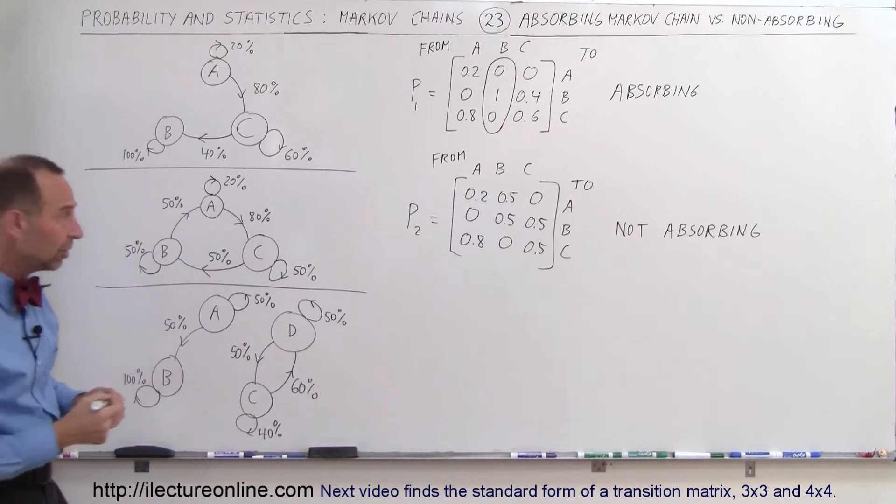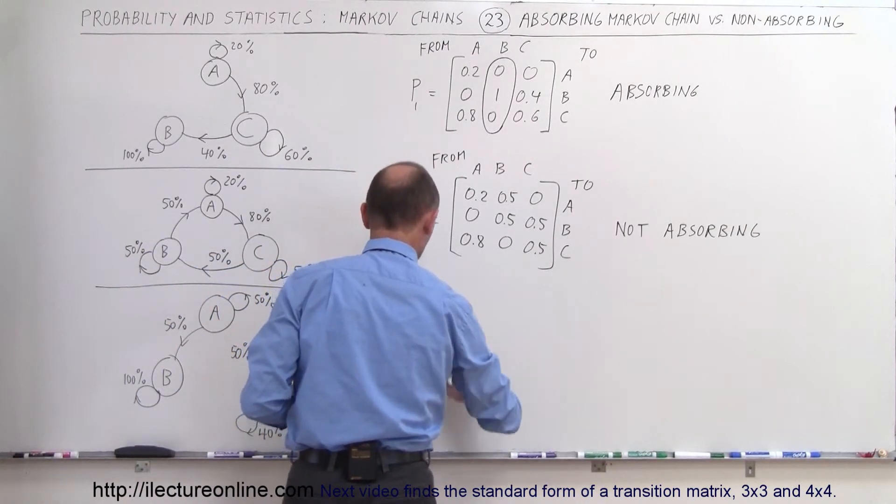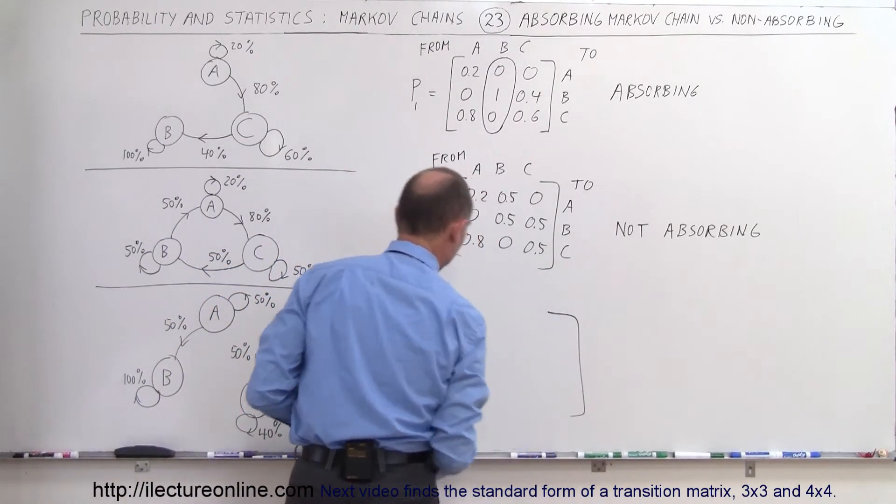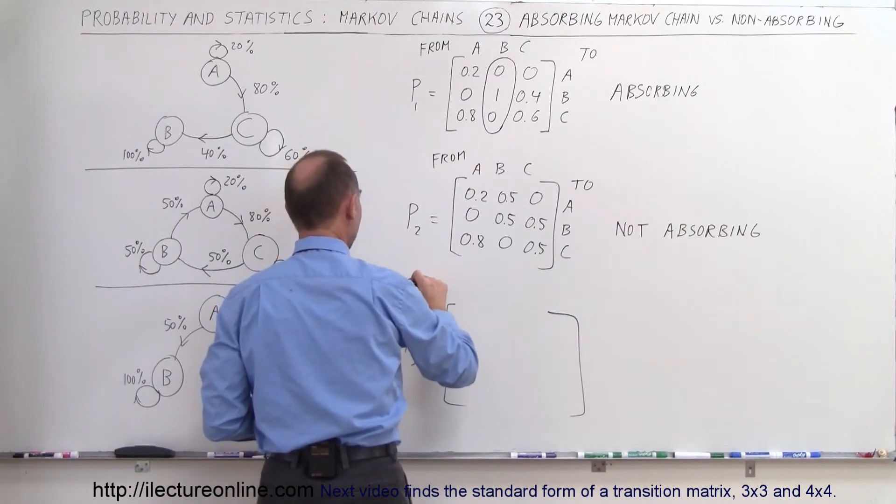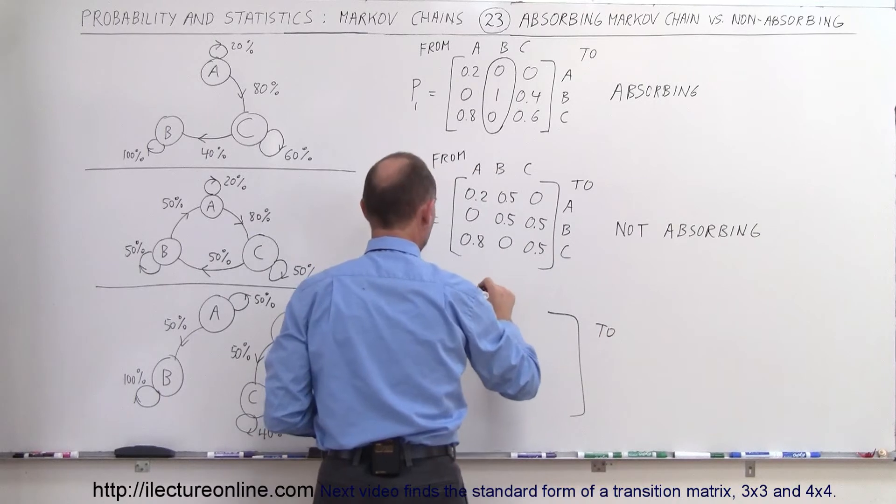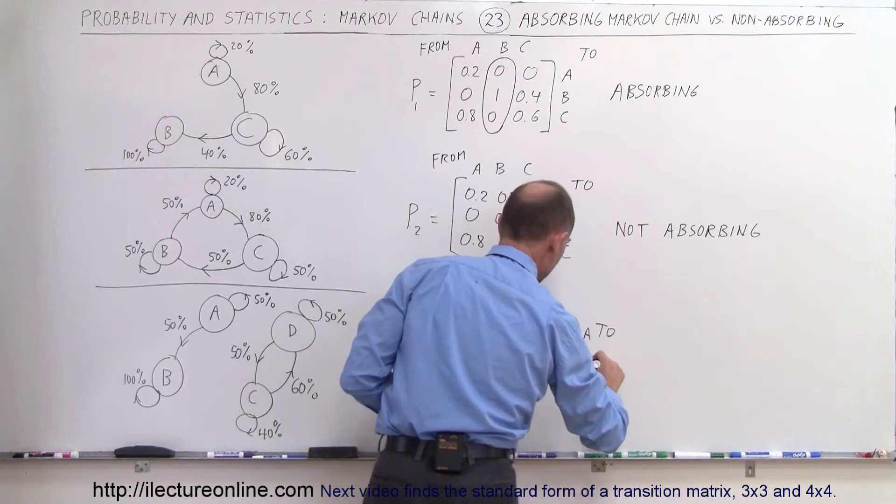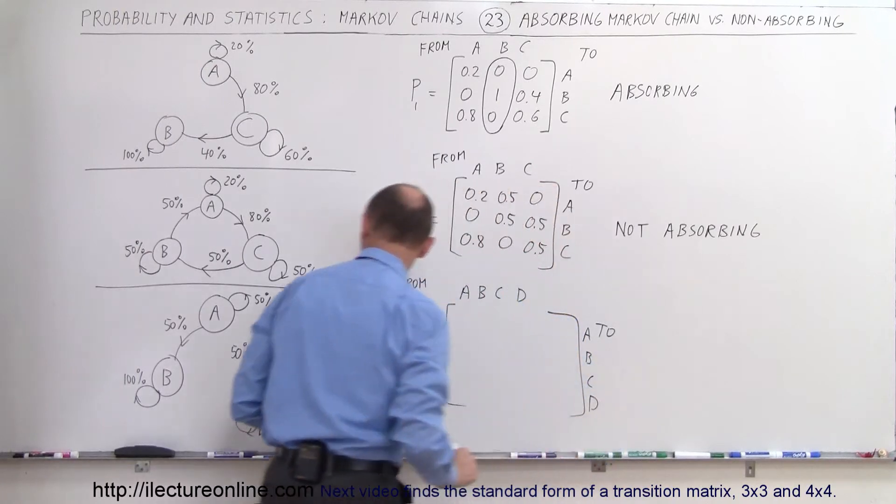So P3 is equal to, a little bigger matrix. So from and to. So from A, B, C and D to A, B, C and D. So let's start at A.